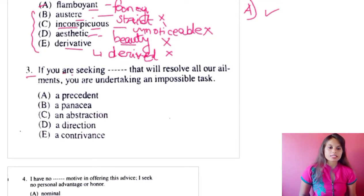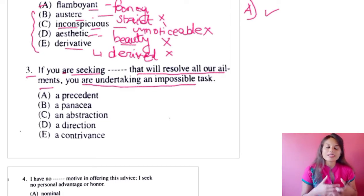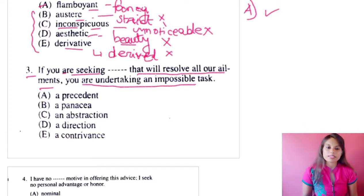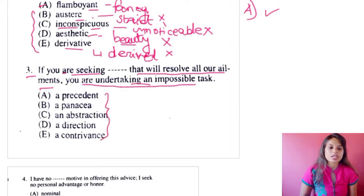Question three: 'If you are seeking [blank] that will resolve all our ailments, then you are undertaking an impossible task.' The sentence talks about a person seeking something that will solve all problems — but that is an impossible task because problems come and go and there cannot be a one-time solution to everything. Let's put the options and check which one goes best.